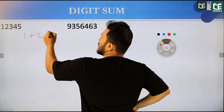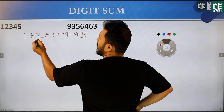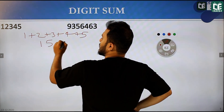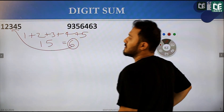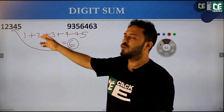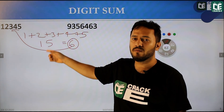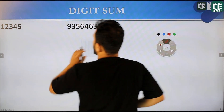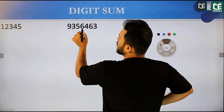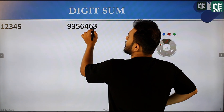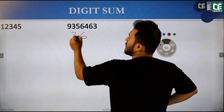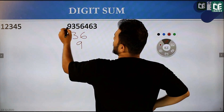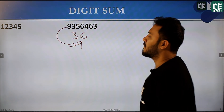1 plus 2 plus 3 plus 4 plus 5: 1 plus 2 is 3, 3 plus 3 is 6, 6 plus 4 is 10, 10 plus 5 is 15. The digit sum of 15 is 1 plus 5 is 6. Ultimately, the digit sum of 1, 2, 3, 4, 5 is 6. Similarly, 9 plus 3 is 12, 12 plus 5 is 17, 17 plus 6 is 23, 23 plus 4 is 27, 27 plus 6 is 33, 33 plus 3 is 36. The number digits ultimately — 9 is written out — this is the same concept.